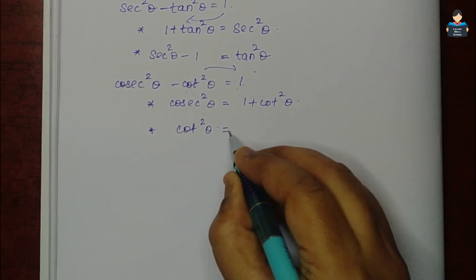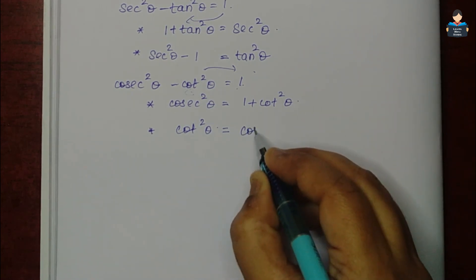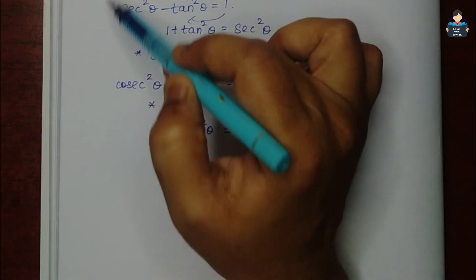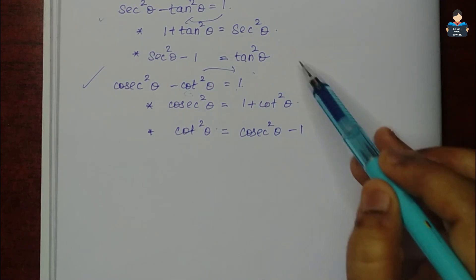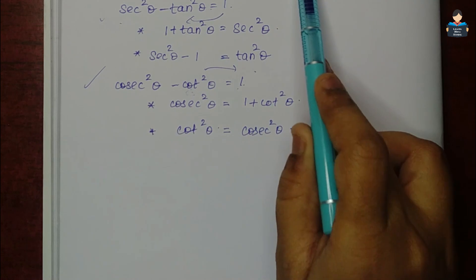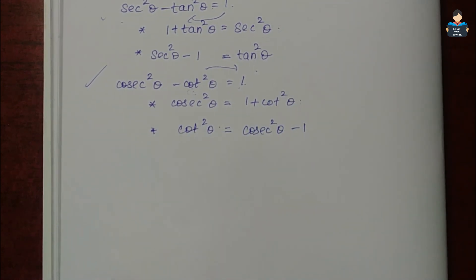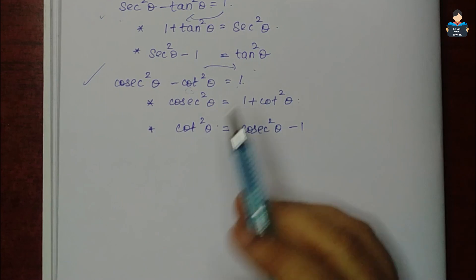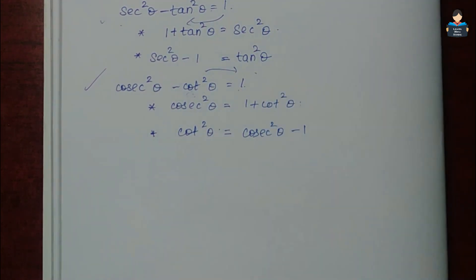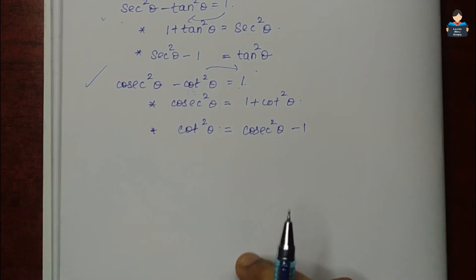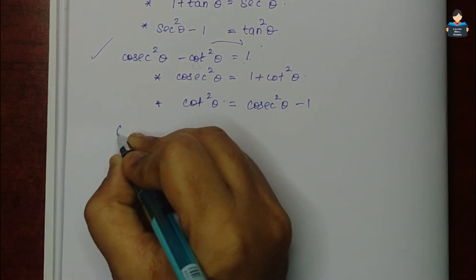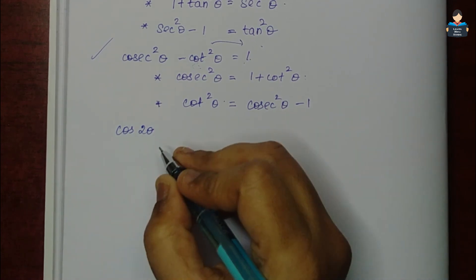Left hand side is equal to cosec²θ minus cot²θ. You can use these 3 Pythagorean formulas and you should memorize them. These 4 formulas will also appear, and next we look at cos2θ.